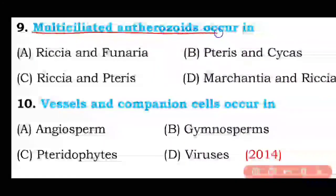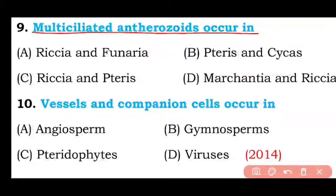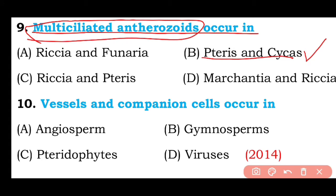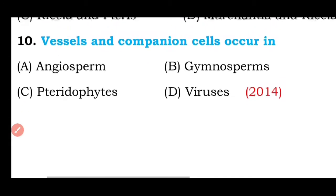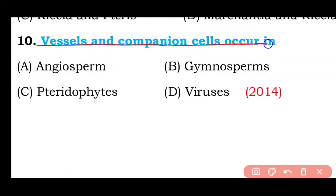Question number nine: Multi-ciliated antherozoids occur in Riccia and Funaria, Pteris and Cycas, Riccia and Pteris, or Marchantia and Dryopteris? The correct answer is option B — Pteris and Cycas have multi-ciliated antherozoids.